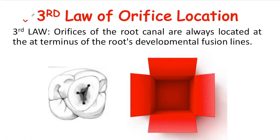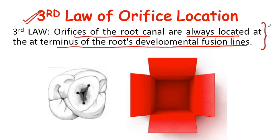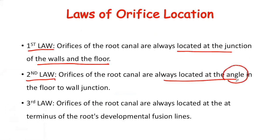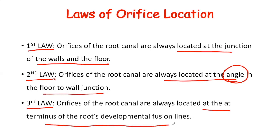The third law of orifice location says that the orifices of root canals are always located at the terminus of the roots' developmental fusion lines. This law gives a more precise location of orifices. As we know, roots have developmental fusion lines, and the orifices are located at the ending point — the terminus — of these lines.